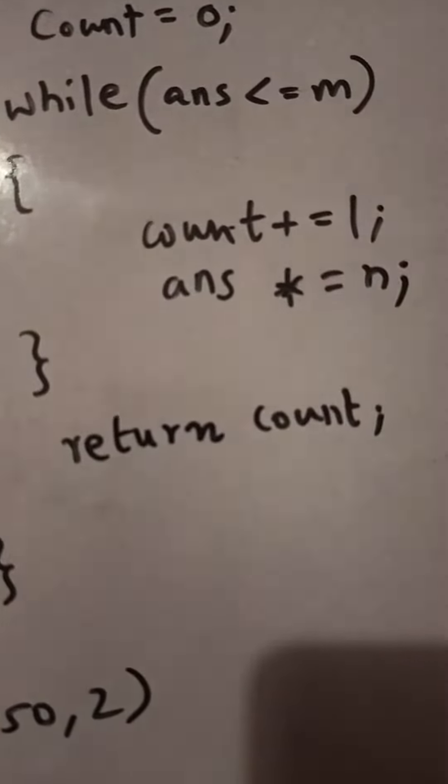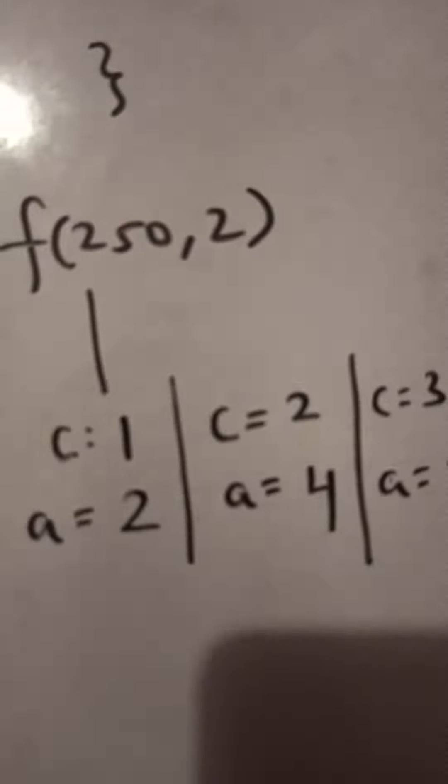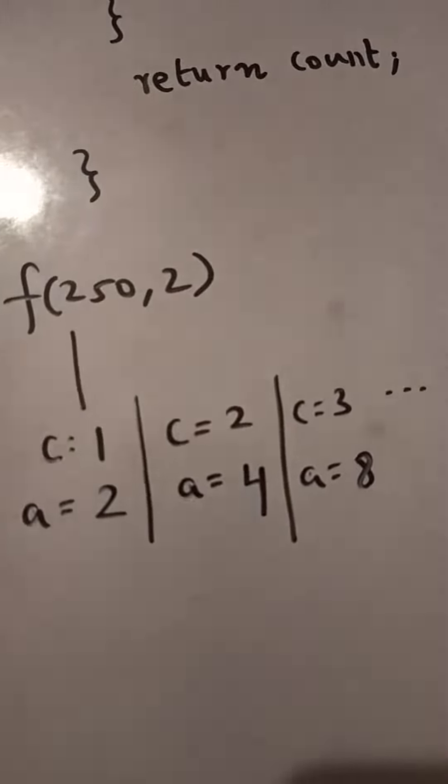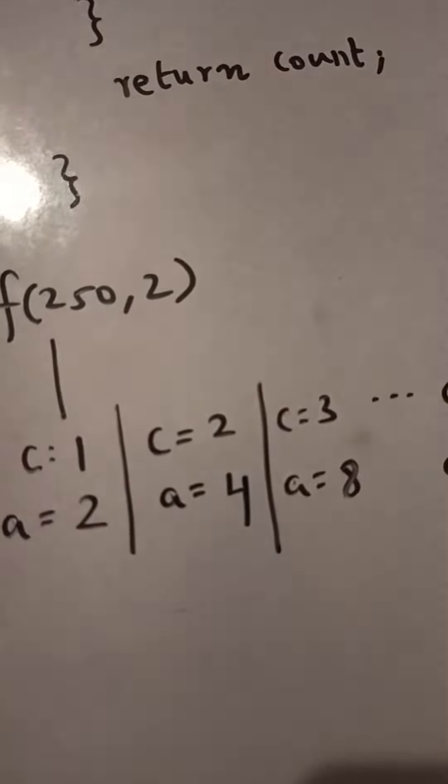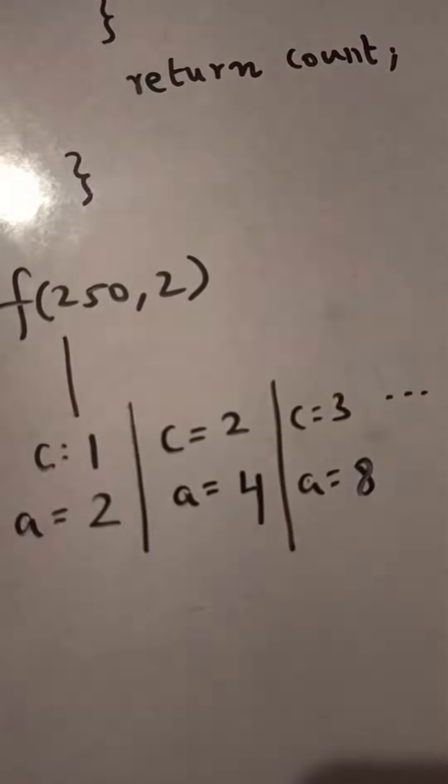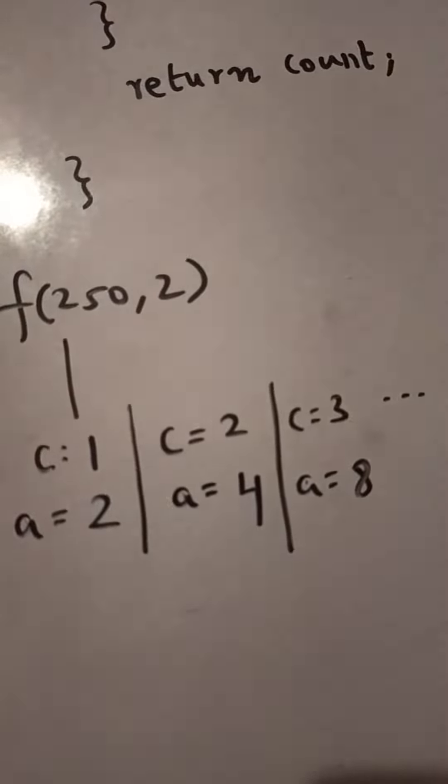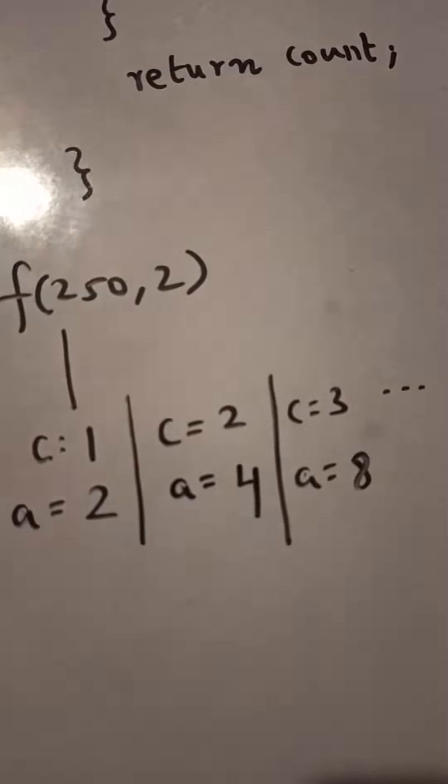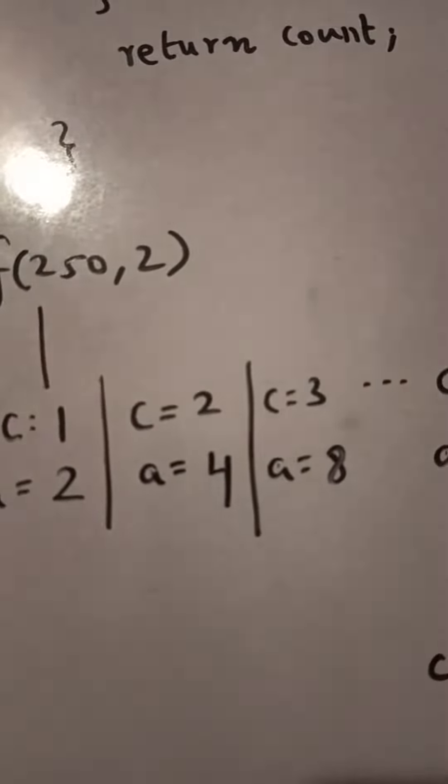It is multiplying by 2 at every step. So you will realize that basically a is 2 power n where n is the value of c, because for c equals 2 you get 2 square as a, for c equals 3 you get 2 cube as 8.